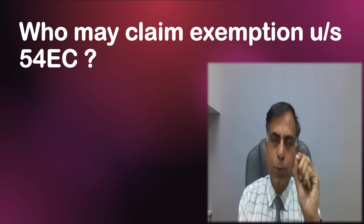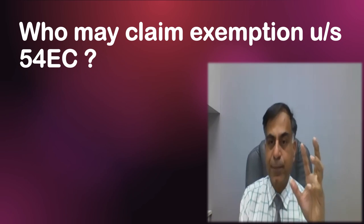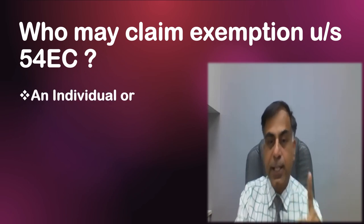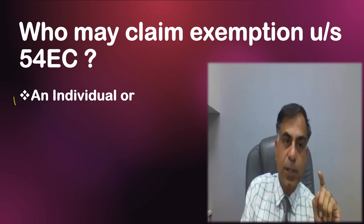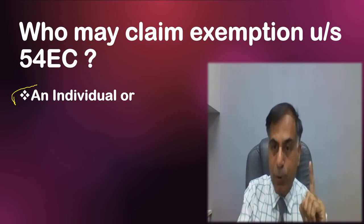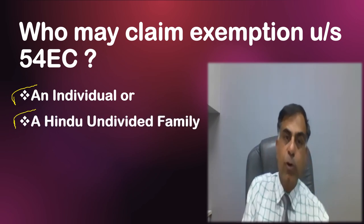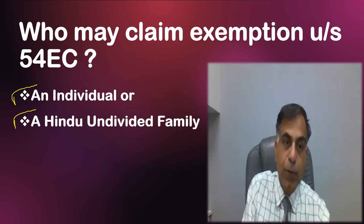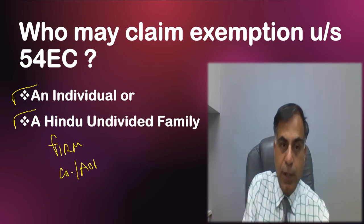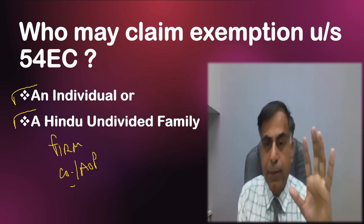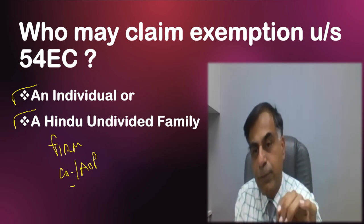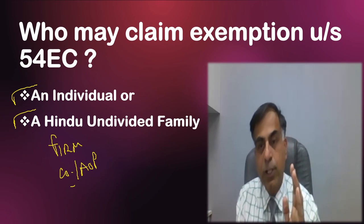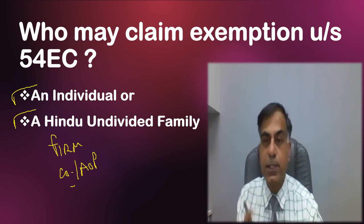Let me begin with the first point: who may claim capital gain exemption under Section 54EC? The first category is an individual — an individual may claim the exemption under Section 54EC, whether resident or non-resident. A Hindu Undivided Family (HUF) may also claim exemption under Section 54EC. Barring them, no other person may — for example, a partnership firm, a company, an AOP, BOI, trust, etc. They are all prima facie not entitled, because Section 54EC allows the exemption to be claimed only by an individual or a Hindu Undivided Family, whether resident or non-resident.